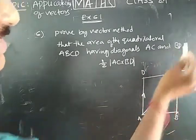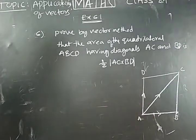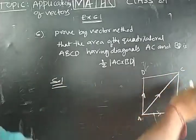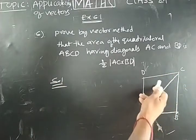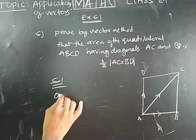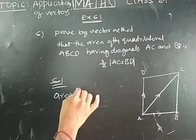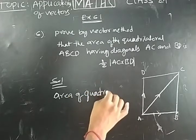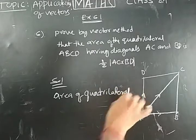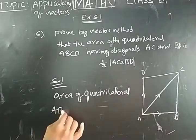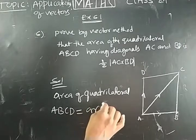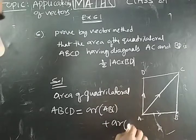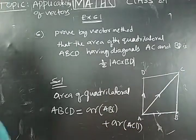We are going to prove that area of ABCD is half of AC cross BD. For that I considered one quadrilateral ABCD, in that we have two triangles. So area of quadrilateral ABCD is equal to area of triangle ABC plus area of triangle ACD. In vector method, we know how to find area of the triangle.